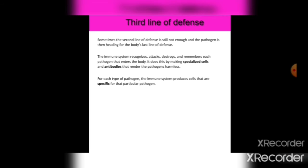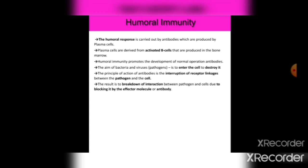The third line of defense activates when the second line is not enough. The immune system recognizes, attacks, destroys, and remembers each pathogen that enters the body. It does this by making specialized antibodies that render pathogens harmless. For each type of pathogen, the immune system produces cells that are specific for that particular pathogen.